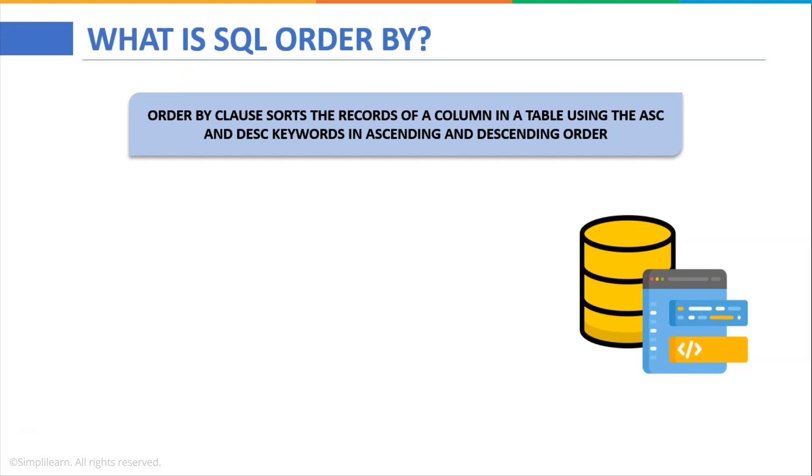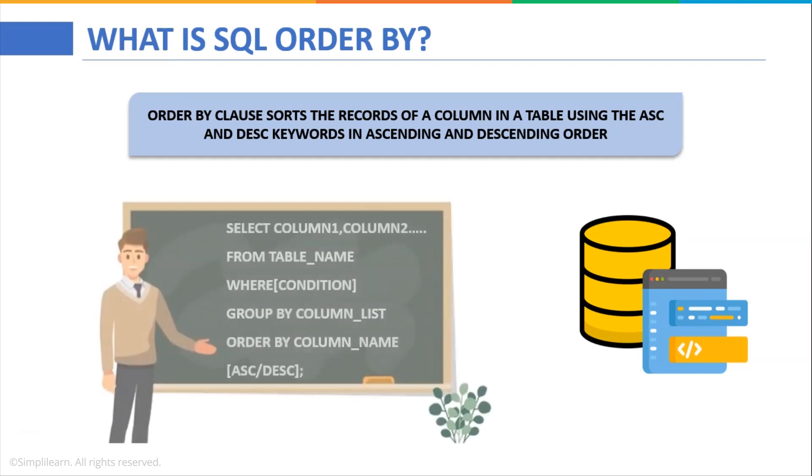And if no keyword is specified in which we have to sort the records in the column, it will take the default value. The ORDER BY clause sorts the records in ascending order by default if we do not mention any specific keyword, that is ASC or DESC.